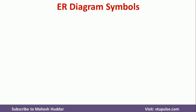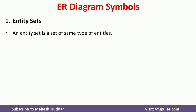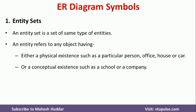First, Entity Sets. An entity set is a set of the same type of entities. An entity refers to any object having either physical existence or conceptual existence. For example, a person, office, house, and car have physical existence — they are called entity sets. Similarly, a school or a company have conceptual existence and are also called entity sets.